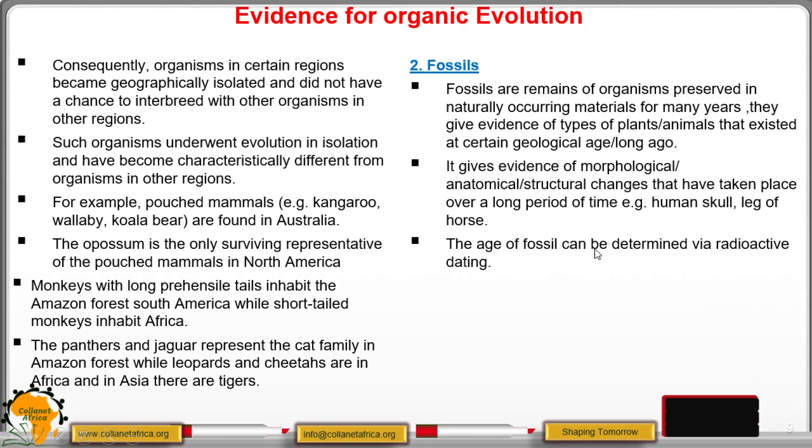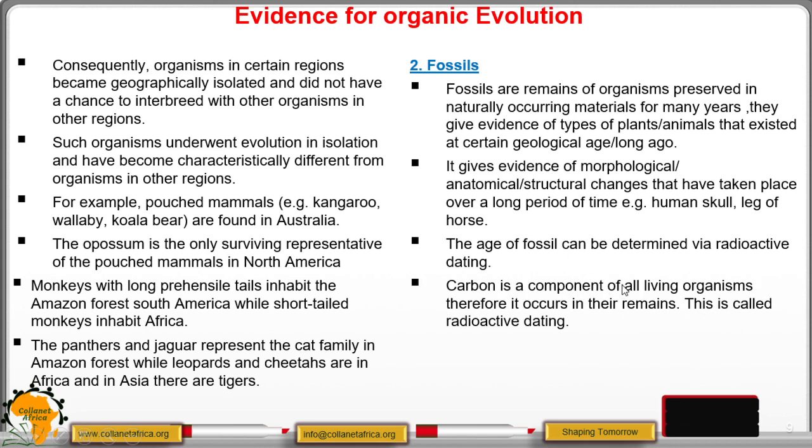The age of a fossil can be determined through a process called radioactive dating. Because carbon is a component of all living organisms, therefore, it occurs or it is present in their remains. And that is what we call radioactive dating. Something which is radioactive is able to spontaneously degenerate or split its nucleus, its atomic nucleus, to release some electrons.